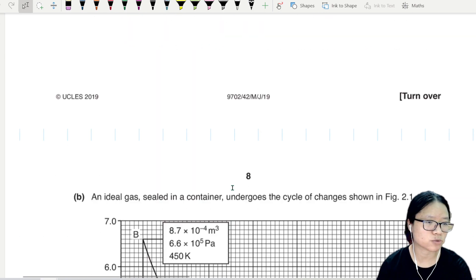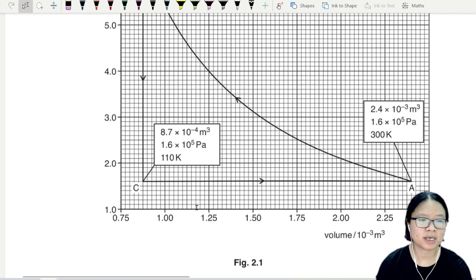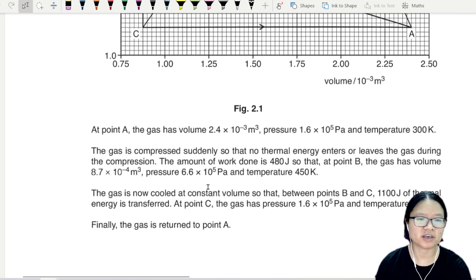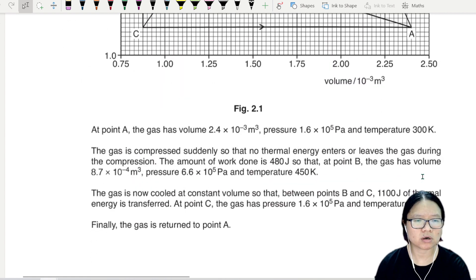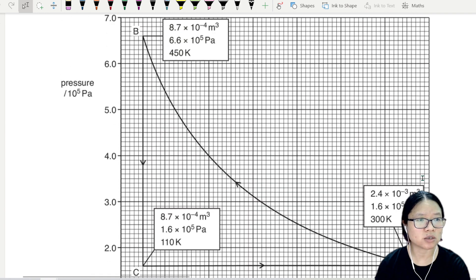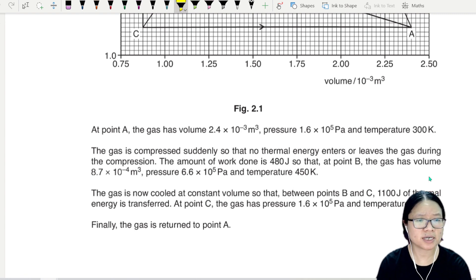Okay, last one. Beautiful PV graph. You are given a lot of information here, a bit of an information overload. Everything is labeled already. The only thing that is not labeled is the energy transfer. It says here that the gas has this initial state.